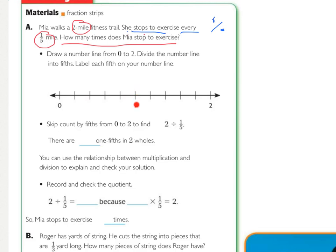5 fifths, which is 1. But we're just counting fifths. So we're going to go 5 fifths, 6 fifths, 7 fifths, 8 fifths, 9 fifths, 10 fifths. So we know that there are 10 one fifths in two wholes.